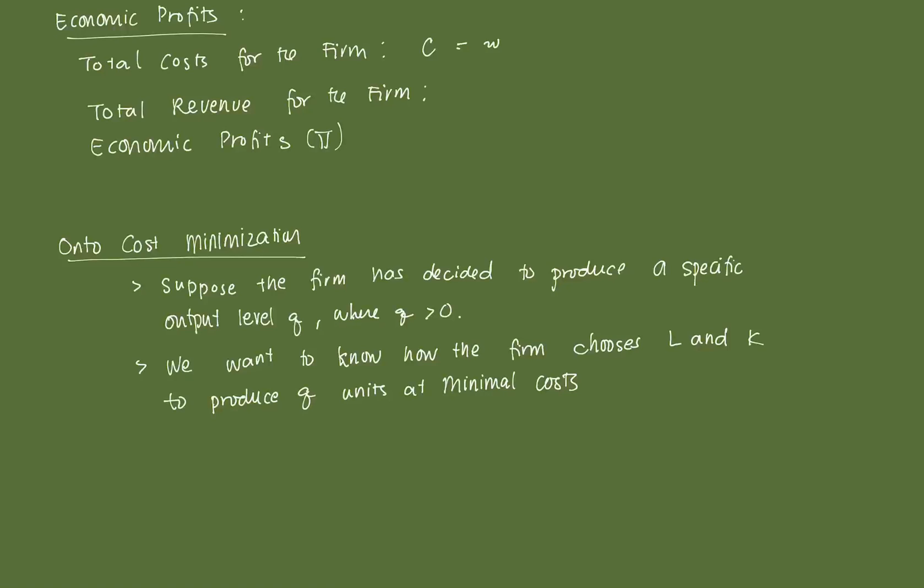times the labor hours that are there. So think of this as wage, and the wage per hour times the number of labor hours right there. This is essentially your total expenditure on labor plus R,